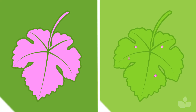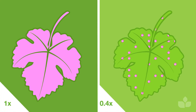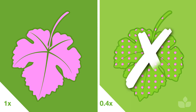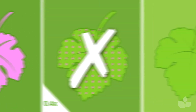High volume dilution rates depend on excellent coverage of the entire target. If lower than point of runoff water volumes are used in conjunction with dilute spray mixing rates, significant underdosing will occur, increasing the chance of products performing poorly.